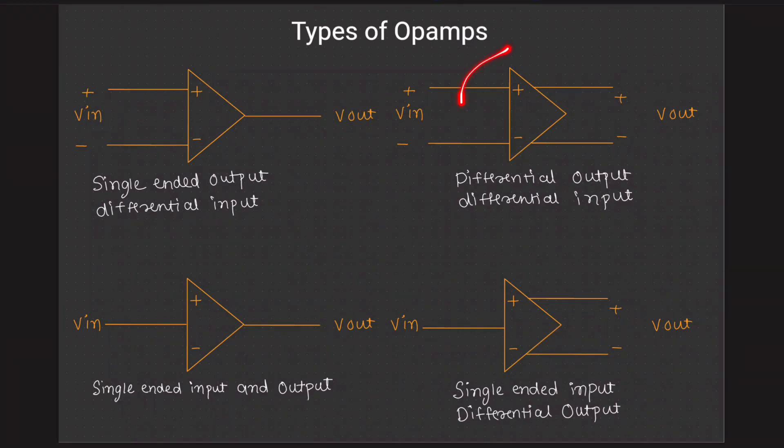What do you mean by differential inputs and differential output? The input will be travelled in the form of Vin plus and Vin minus and same as the output. There will be a common mode voltage, there will be a differential voltage. We will see this in the upcoming lectures.